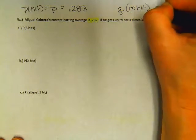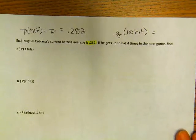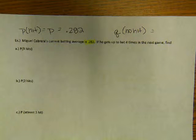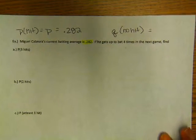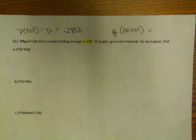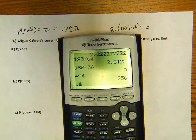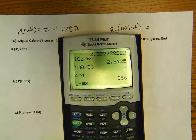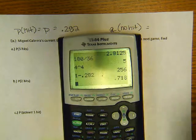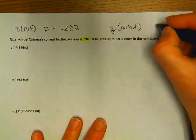So what would Q be then? .282. .718, alright.